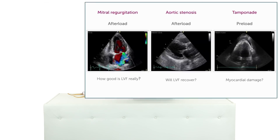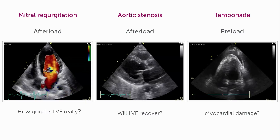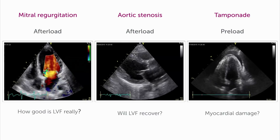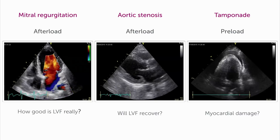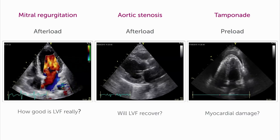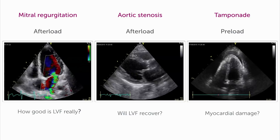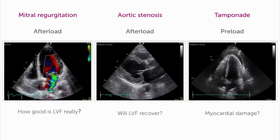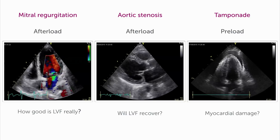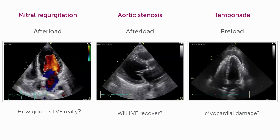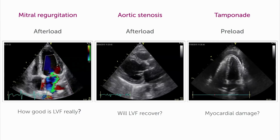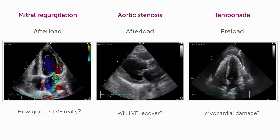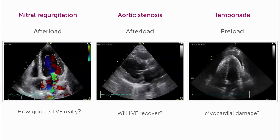But why do you care about all these hemodynamic factors? Let me show you some clinical examples where they play an important role. Here is a patient who has mitral regurgitation. In this case, afterload is reduced because there is a hole in the mitral valve and lots of the pressure is released into the left atrium. So the ventricle in this case looks better than it actually is — the true contractility of the myocardium is overestimated if you just look at how the ventricle is moving.